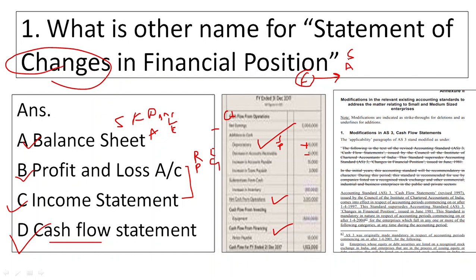So that is the funds flow statement. As per the Institute of Chartered Accountants of India, Accounting Standard 3, which was issued in 1981, was the statement of changes in financial position. Then it was revised in 1997 to cash flow statement. So Accounting Standard 3 holds the information about cash flow statement, which is the statement of changes in financial position.